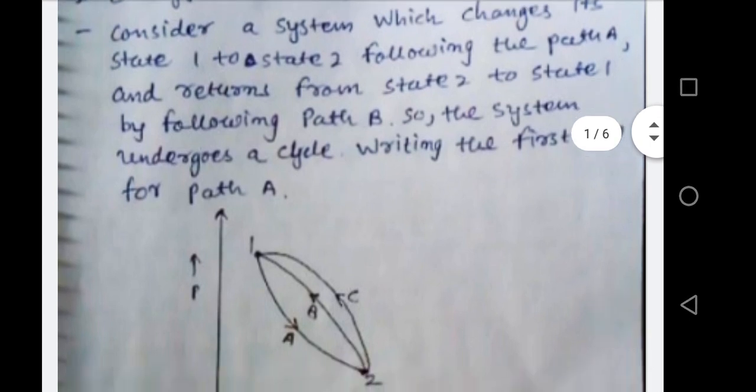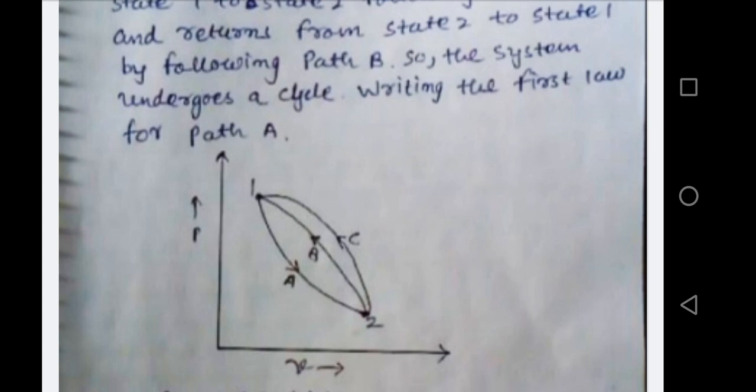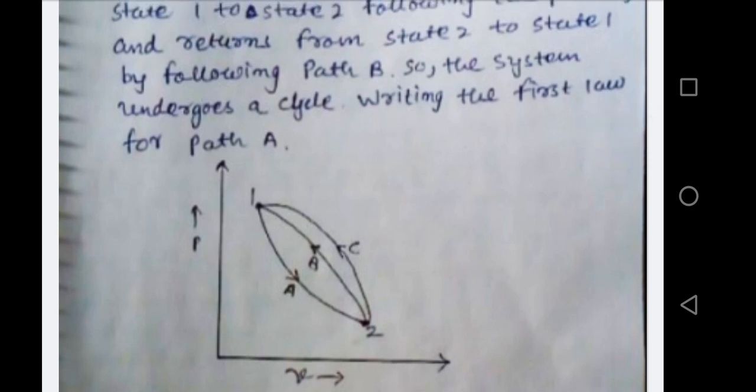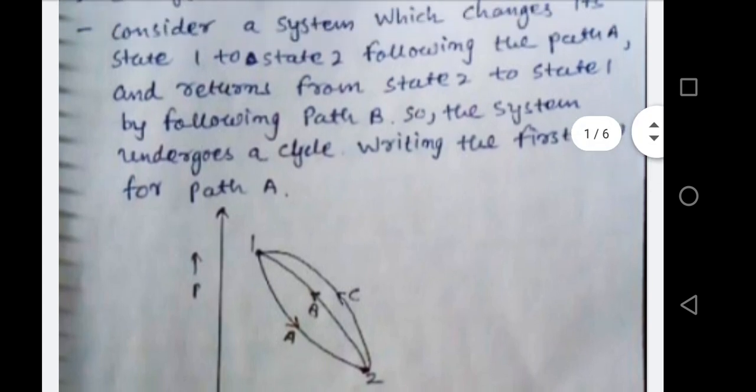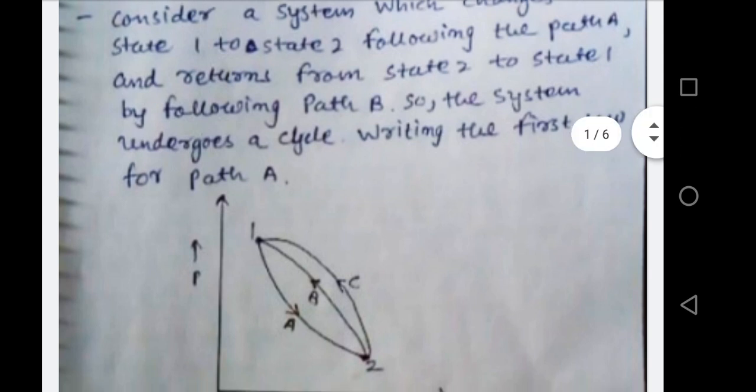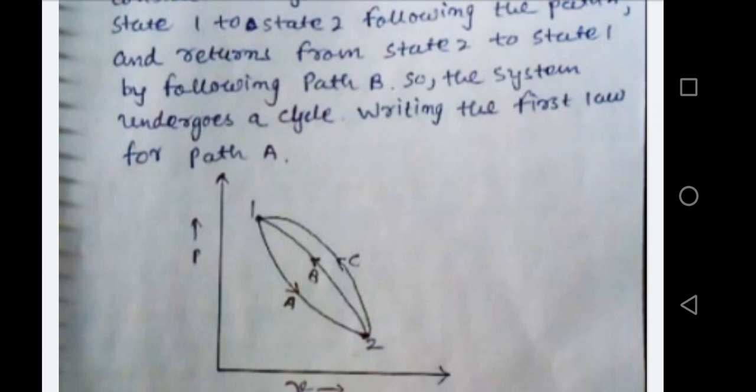Consider a system which changes its state from 1 to 2 following path A. You can see that there is a PV diagram given, on which process 1 to 2 is taking place along path A. The process returns to its initial state — process 2 to 1 — through path B as well as path C. When the cycle 1-A-2-B-1 takes place, QA equals delta EA plus WA, as per the first law. For a cycle, sigma Q equals J into sigma W.